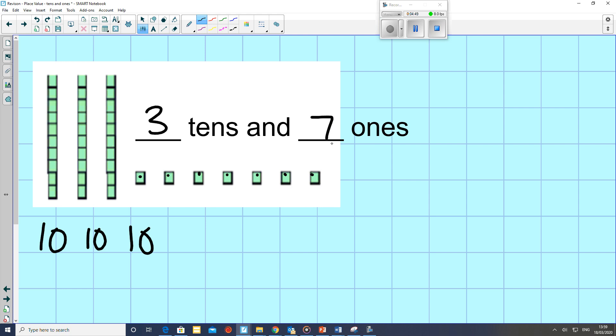Okay. So the 3 tens make 30, add it to the 7 ones, and together they make 37.